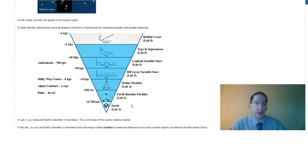In this lab, we'll use that diameter measurement and the parallax technique, which I'll describe in the next background section, to measure distances within our solar system. In particular, we'll measure the distance to a main belt asteroid and to the planet Venus.